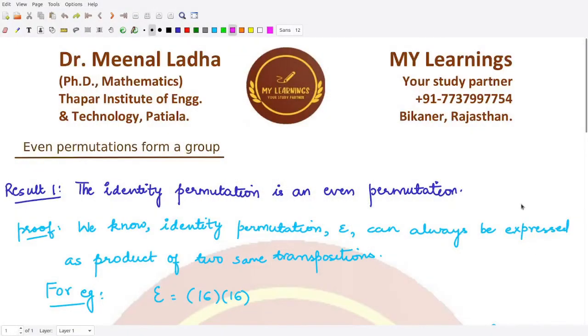Hello everyone, welcome to this video. In this video we'll be looking at the group which is formed by even permutations. Let's first see the result that we have used in the previous video. The result states that the identity permutation is an even permutation. Let's try and prove this result. The proof here is very simple.